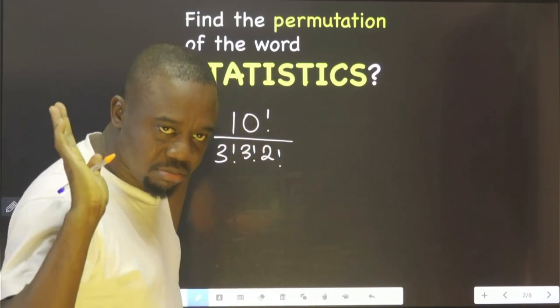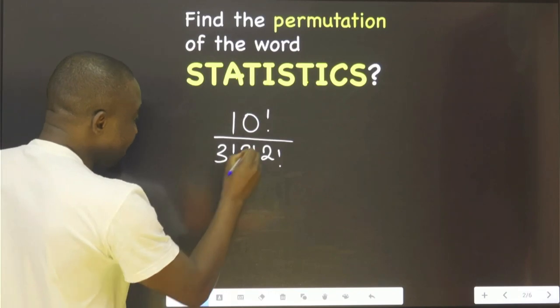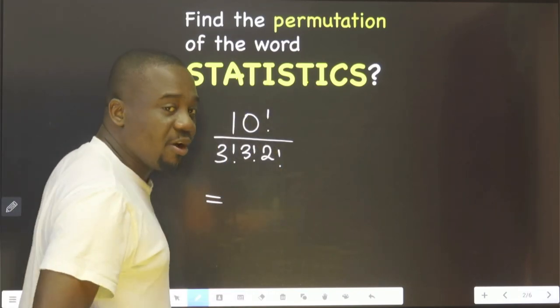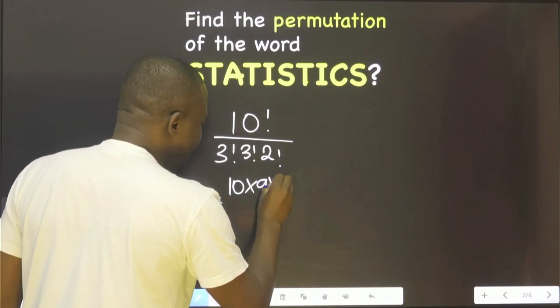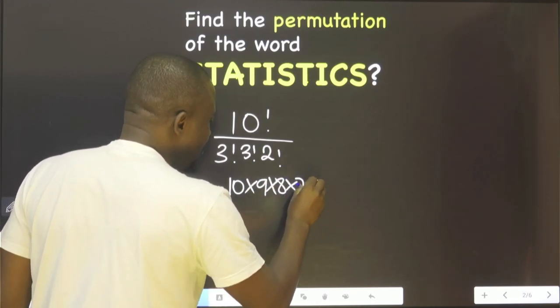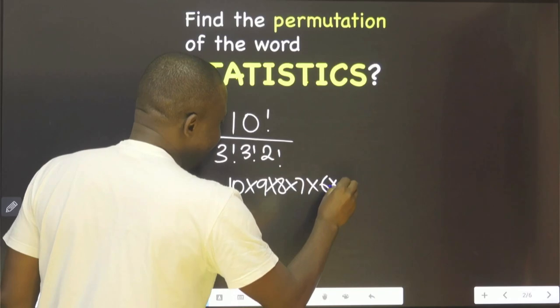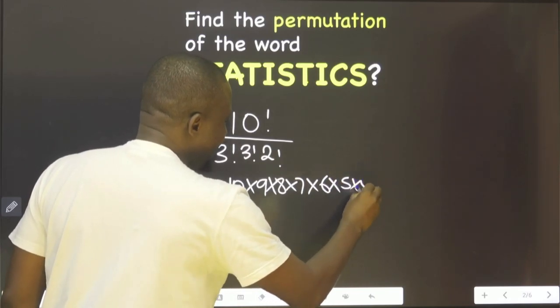This is a piece of cake now. This is equal to what is the meaning of 10 factorial? That is 10 multiplied by 9 multiplied by 8 multiplied by 7 multiplied by 6 multiplied by 5 multiplied by 4 multiplied by 3...